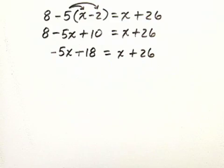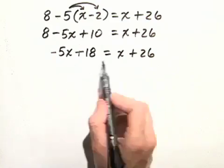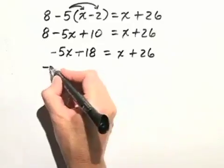Now let's go ahead and move the terms that have variables to the left hand side. So we can do that by subtracting x from both sides of the equation.